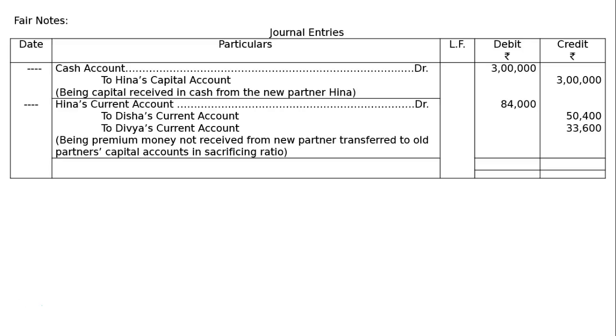The total of both debit and credit column is Rs. 3,84,000. The final totaling of both columns is Rs. 3,84,000 each.